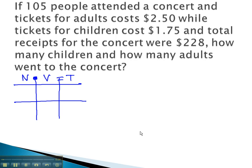In this problem, we have several people attending a concert. Each ticket has a value attached to it. We have adults and we have children attending this concert. We aren't given any information about the number of adults or the number of children. So let's just use A for the number of adults and C for the number of children.